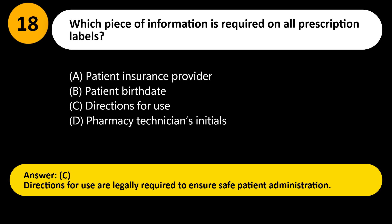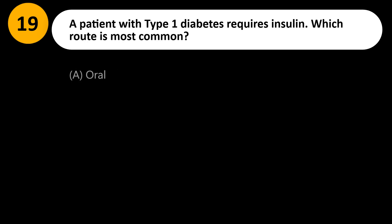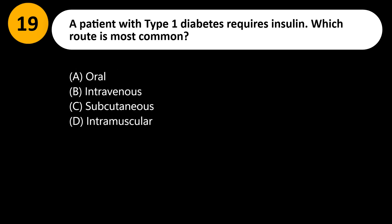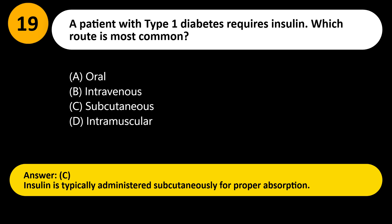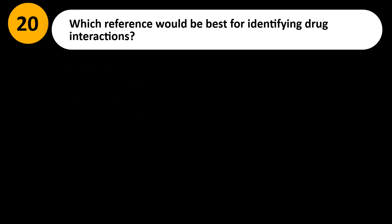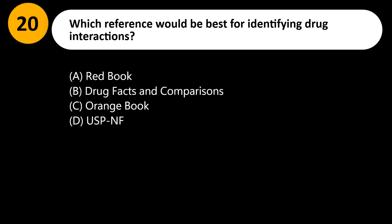A patient with Type 1 diabetes requires insulin. Which route is most common? A) Oral, B) Intravenous, C) Subcutaneous, D) Intramuscular. Answer: C. Insulin is typically administered subcutaneously for proper absorption.